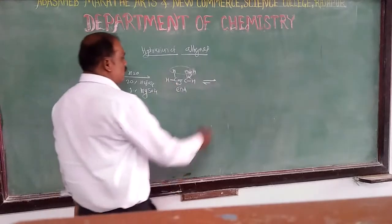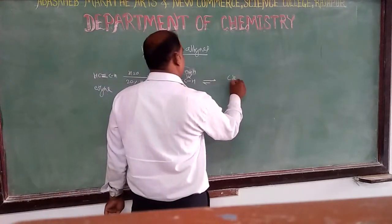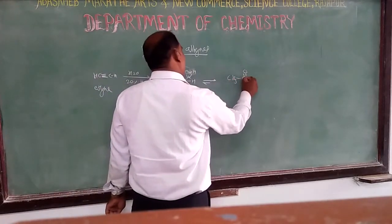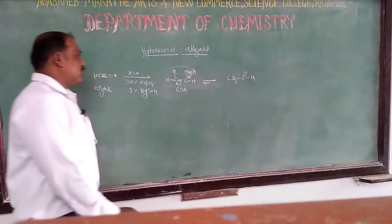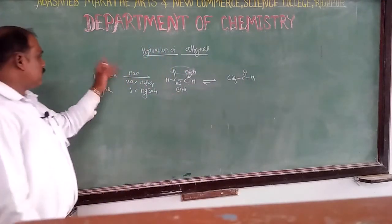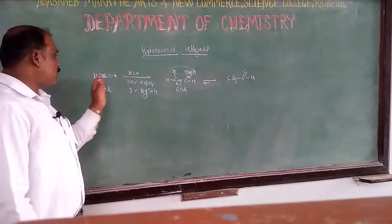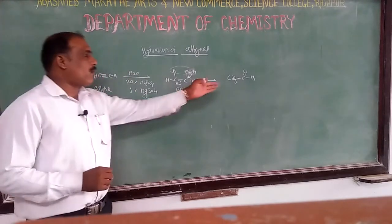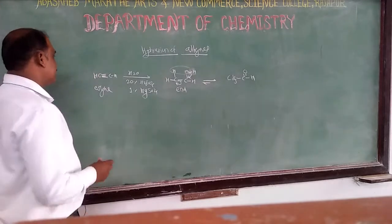The molecule formed is CH₃CHO — acetaldehyde. So by adding water molecules across the triple bond of ethyne, the product obtained is acetaldehyde.